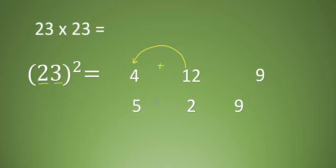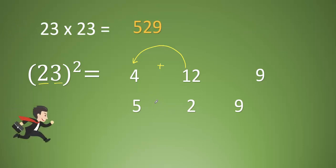So the result is 529. Let's see one more example: 53 the whole square. Step 1: square of 5 is 25. Then multiply both, 15 into 2 is 30. Then square the unit place is 9. So I will write 9, then 0, then